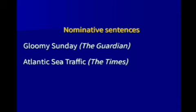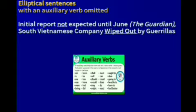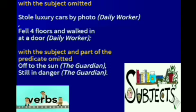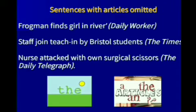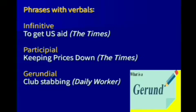By being short and structurally unusual, headlines give us some hint and information about the meaning of the whole article. Sometimes we can see elliptical sentences with the auxiliary verb omitted, as you can see on the screen. Sometimes they omit the subject of the sentence — 'Off to the sun,' 'Still in danger' — and still it gives the meaning of the article. Sometimes articles are omitted in headlines, but the meaning remains understandable. There are also phrases with verbals: 'To get USA aid,' 'Keeping prices down,' and so on.